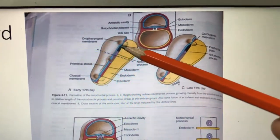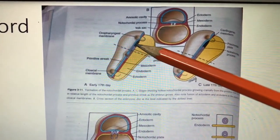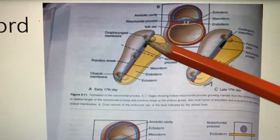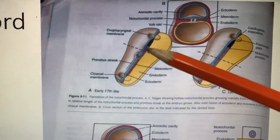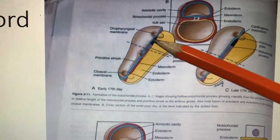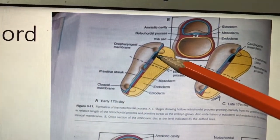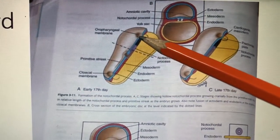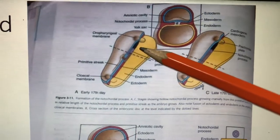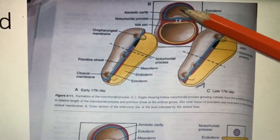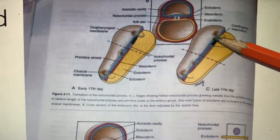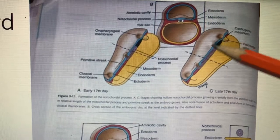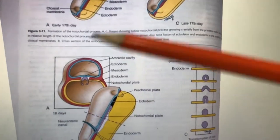Now what is the role of the primitive pit and node? Through the primitive pit, cells go cranially — toward the head — up to the oropharyngeal membrane. Beyond that, mesoderm stops and a new formation occurs: the notochordal process. Epiblastic cells deep in the primitive pit go cranially up to the oropharyngeal membrane and form the notochordal process. This notochordal process sends signals to the overlying ectoderm and forms the neural tube and CNS — the central nervous system.